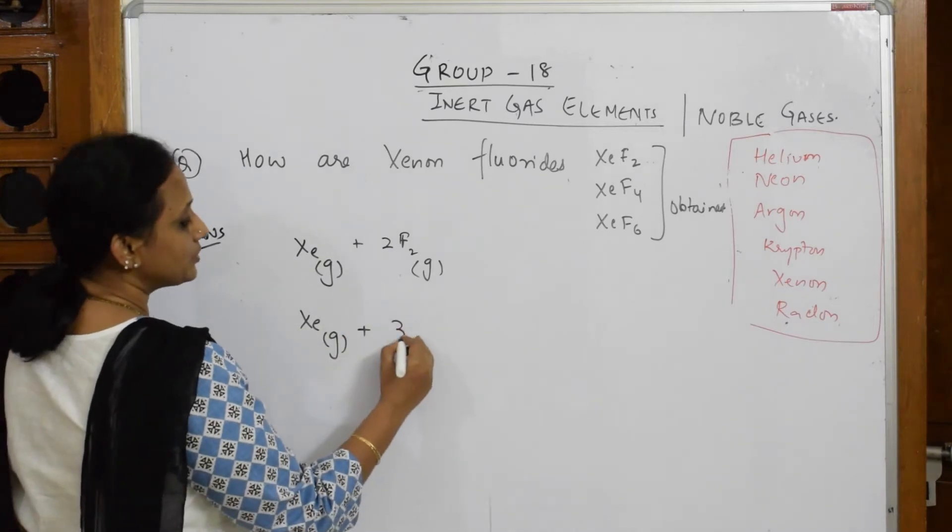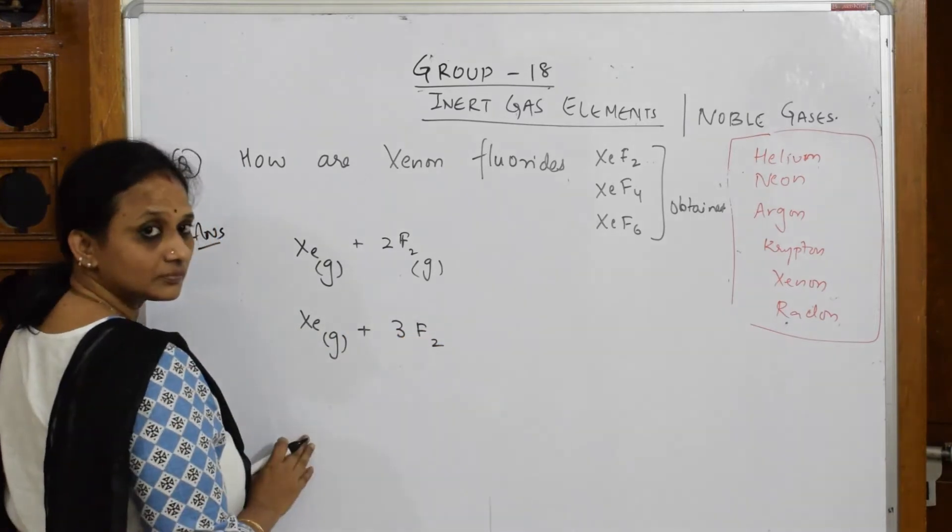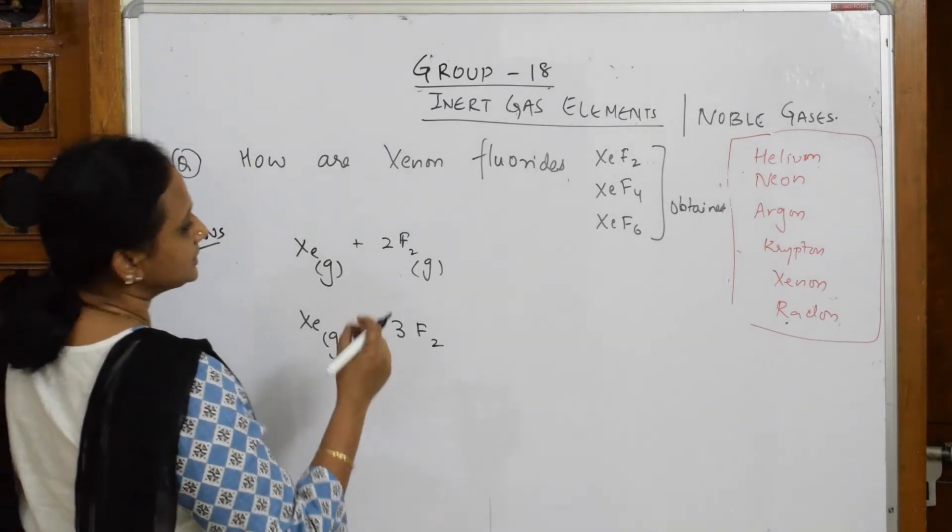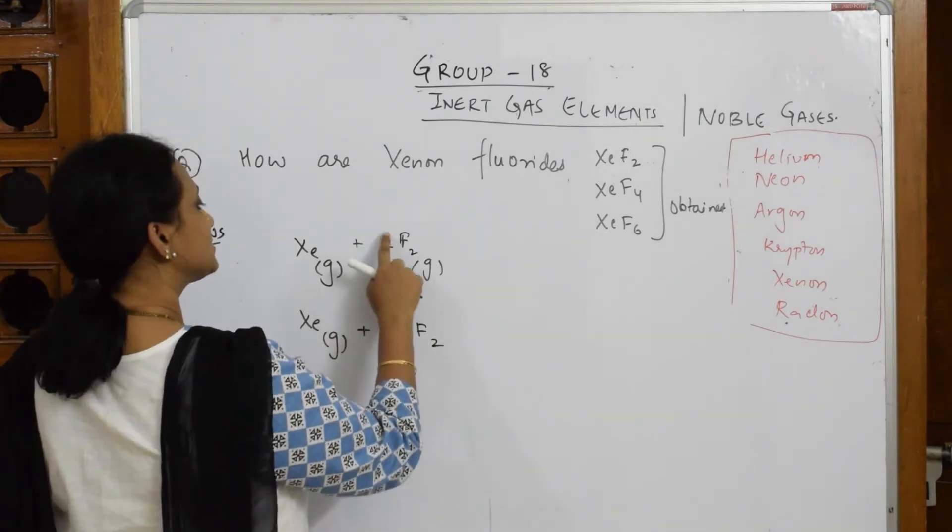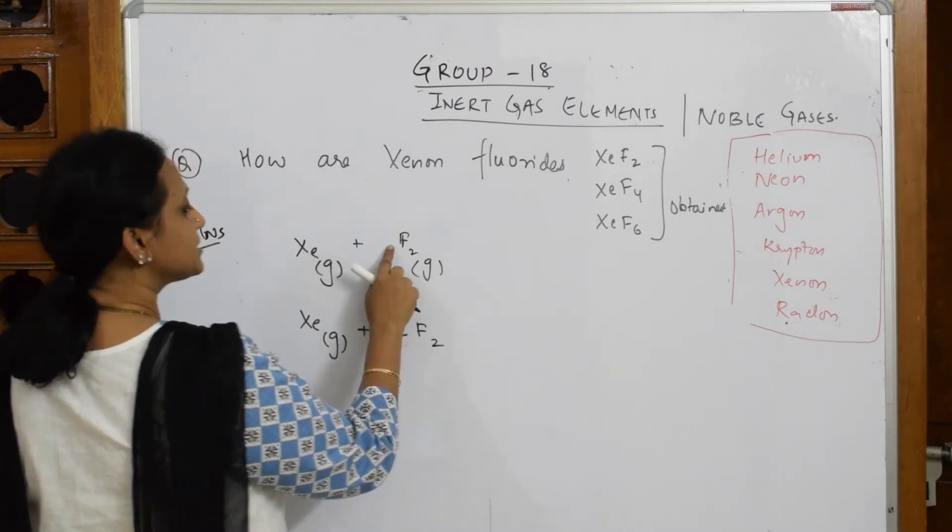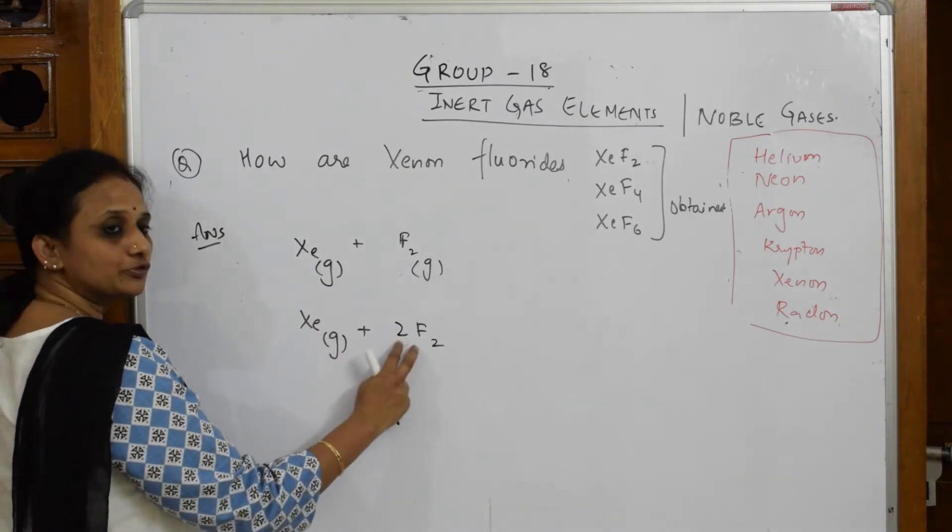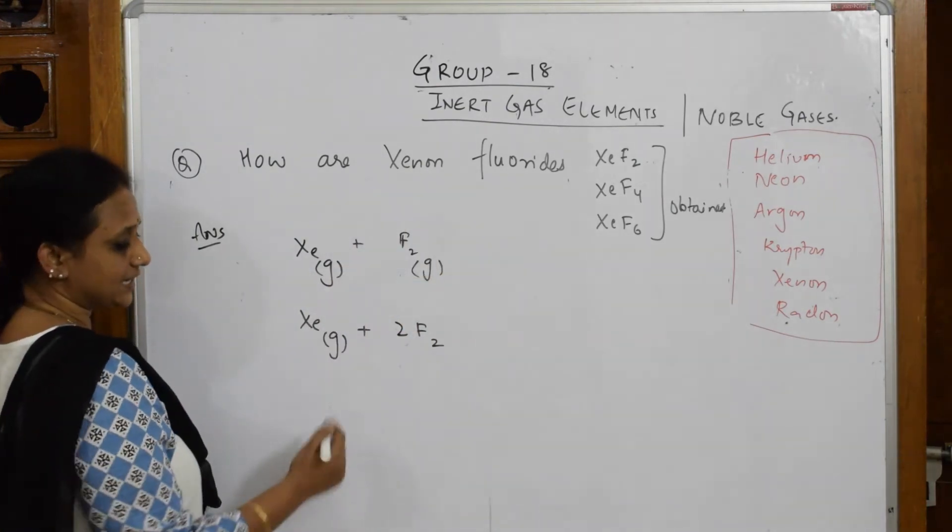I'm going to take three fluorine atoms. Let me write this correctly—this is not 2. This will be 2 because I want only XeF2. So Xe plus F2. Now Xe with two fluorine atoms, I can prepare the second one.